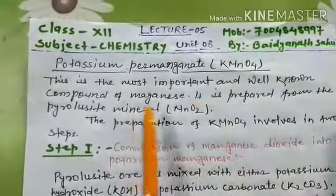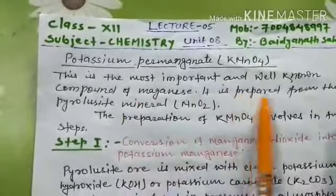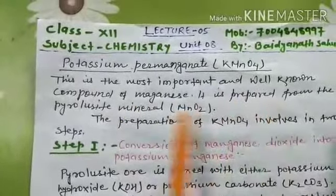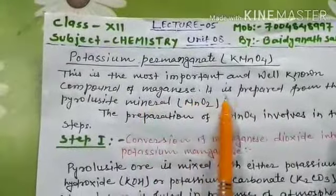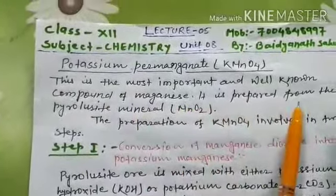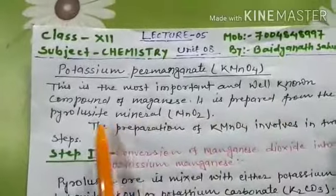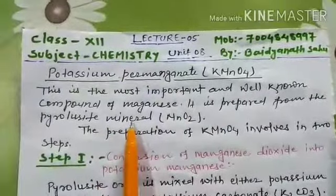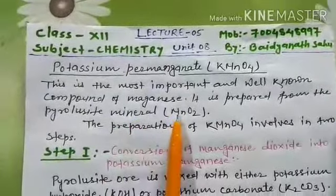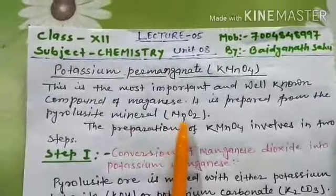Potassium permanganate is the most important and well-known compound of manganese. It is prepared from the pyrolusite mineral, which is MnO₂.